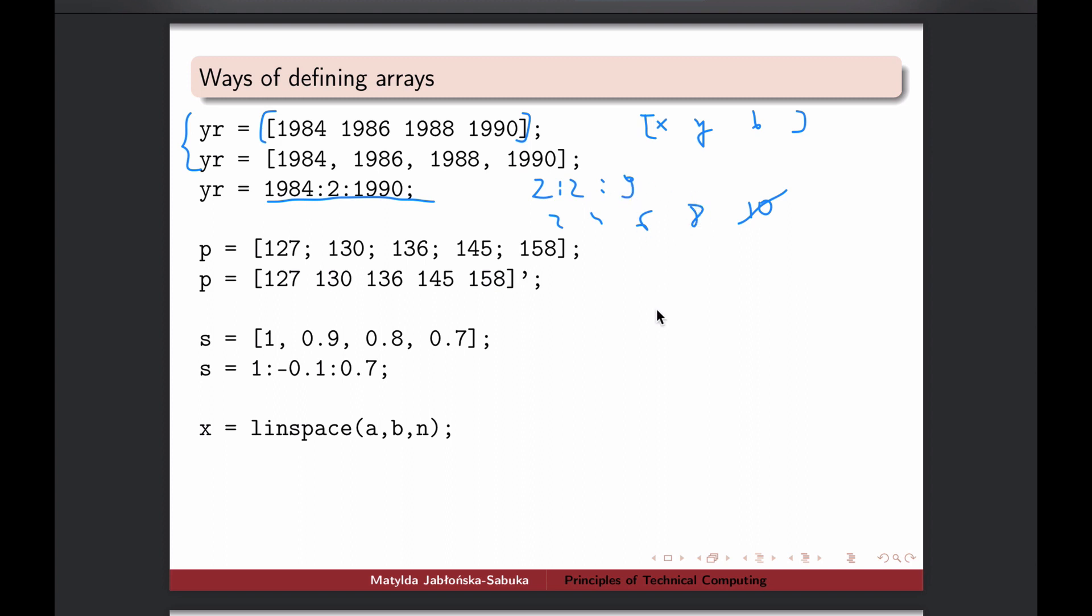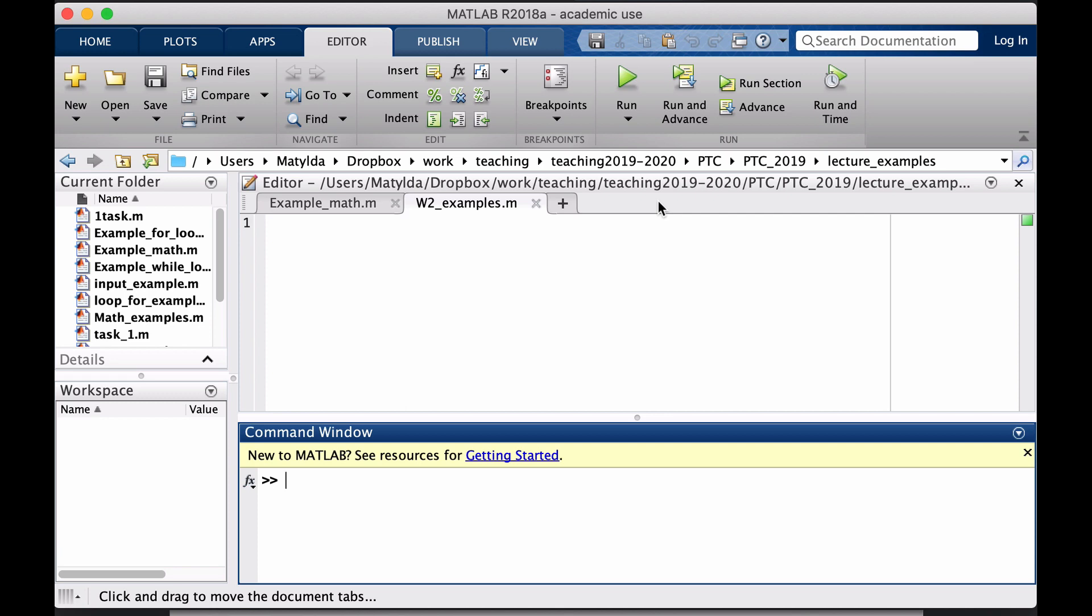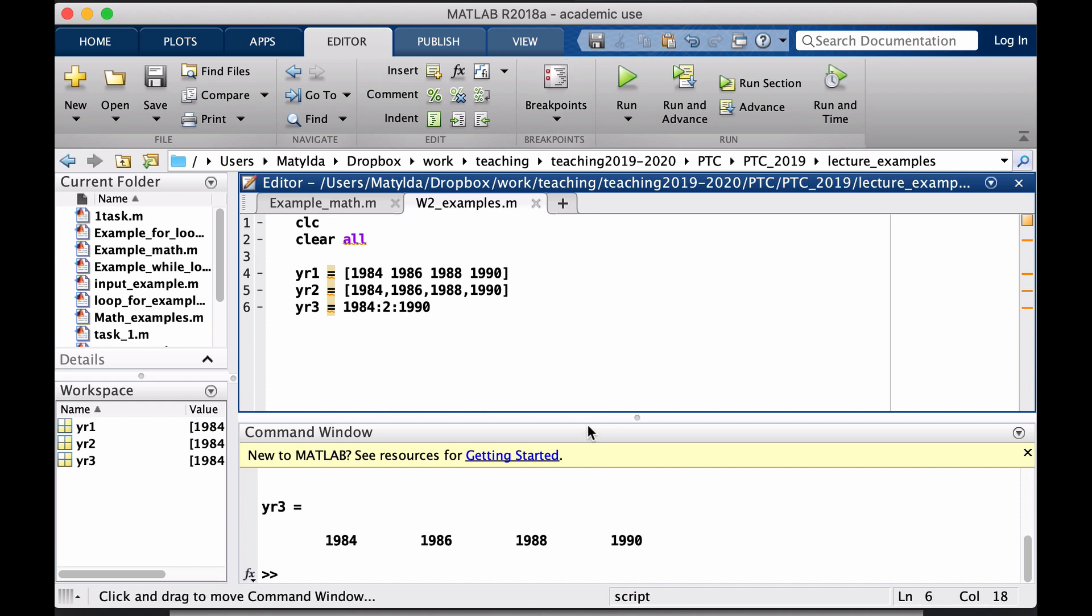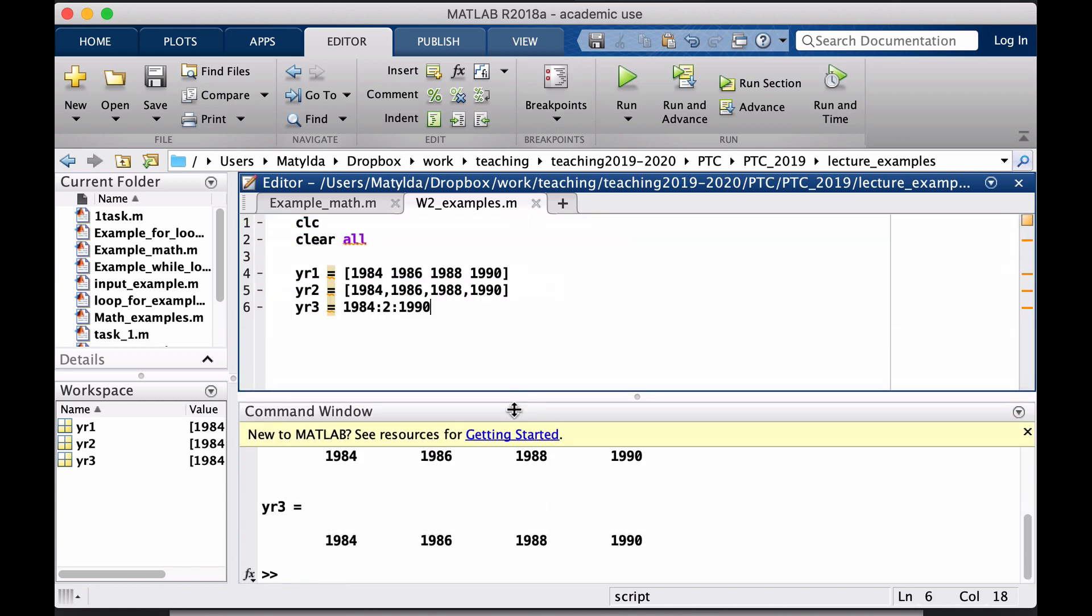Let's type it in here. So we have our year, 1984, 86, 88, 90. The other way was the same but with commas separating our years. And the last one was with the step, so 1984 with step 2 to 1990. When I run those three, I will get exactly the same looking arrays for each one of them.